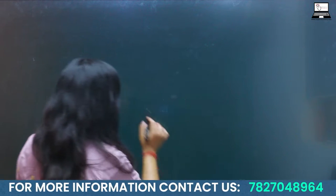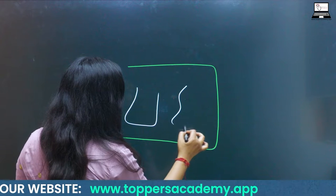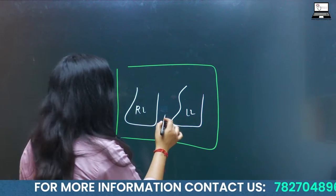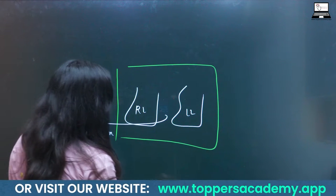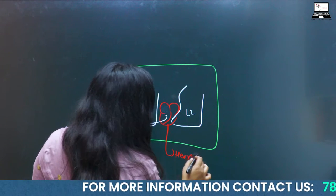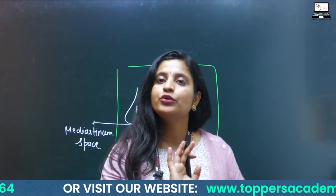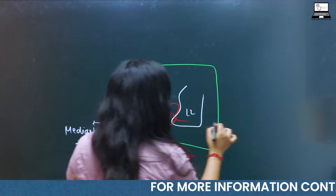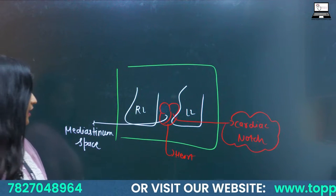In the thorax we have one pair of lungs — the right lung and the left lung. The space between the two lungs is the mediastinum space, and in that mediastinum space our heart is present. When we were in embryonic development, a portion of the heart was pushed a little towards the left side, and because of that a notch was created in your left lung, which is known as the cardiac notch.